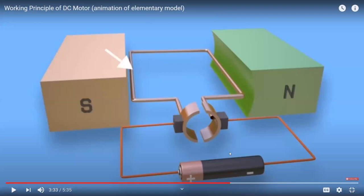The DC motor principle in one line: whenever a current-carrying conductor is placed in a magnetic field, it experiences a force. The direction of that force is given by Fleming's left-hand rule.